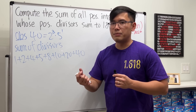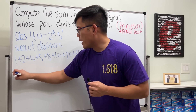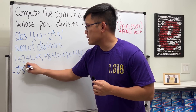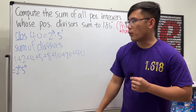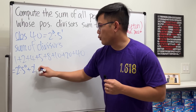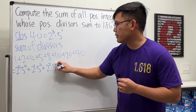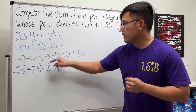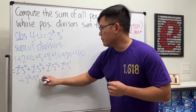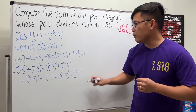For example: 1 = 2⁰ × 5⁰, 2 = 2¹ × 5⁰, 4 = 2² × 5⁰, 5 = 2⁰ × 5¹, 8 = 2³ × 5⁰, 10 = 2¹ × 5¹, 20 = 2² × 5¹, and 40 = 2³ × 5¹.